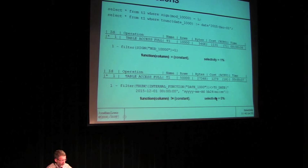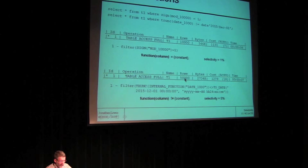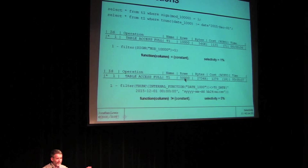What about TRUNK of date — not equal to? Function_of_column not equal to constant. We can see easy numbers here: 50,000 out of a million. Play around with different sizes of data to confirm it — Oracle says selectivity is 5%. So we get this funny thing: function_of_column equals constant is 1%, function_of_column not equal to constant is 5%. We've lost 94%. Oracle's just guessing.